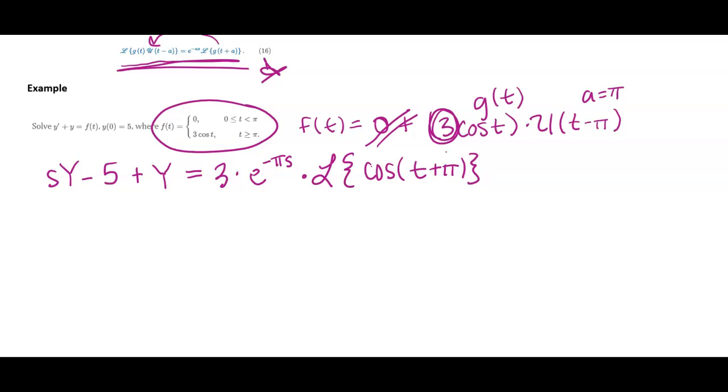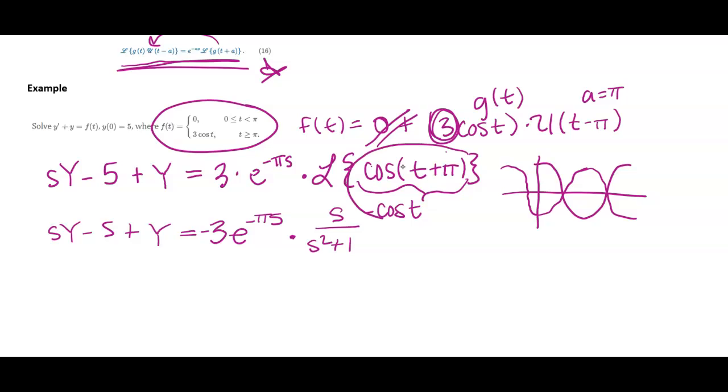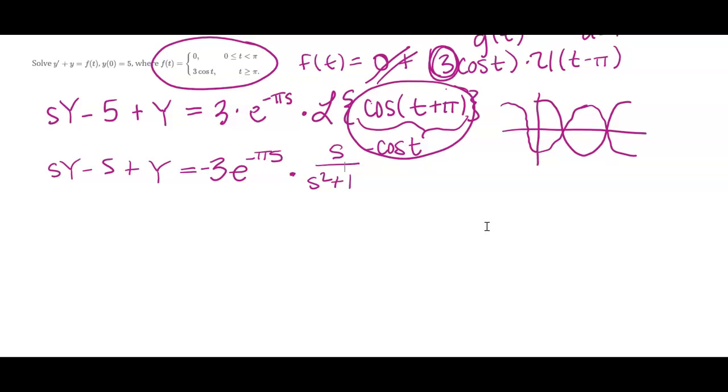So the cosine of t plus pi is what I need to take the Laplace of on the inside. Now we don't know how to take the Laplace of like composite pieces, but remember your cosine function has a period of two pi. So if I just add this over, let's see, it actually would go this way. It's going to look something like that. Well, what ends up happening is that this is the same as negative cosine t. So I'm going to have everything on my left hand side. I'm going to have negative three e to the negative pi s. And then I can take the Laplace of cosine t, which ends up being s over s squared plus one. So that's a trig identity kind of trick there so that I can take the Laplace of that.